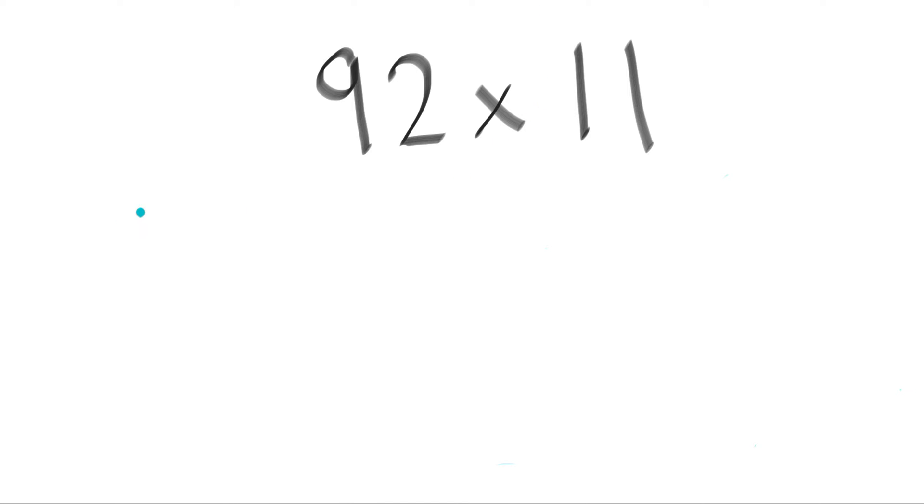92 times 11. Let's do the same thing. 9, 2, 9 plus 2 gives you 11, and when you add this up, you get 9, 2, 1, 10. 10, 1, 2. 1012. Let's try that again.